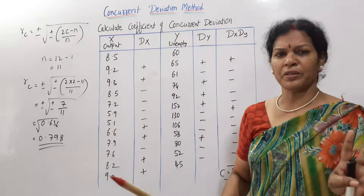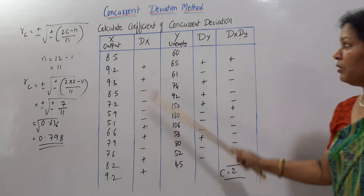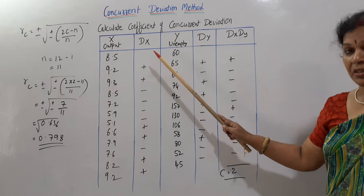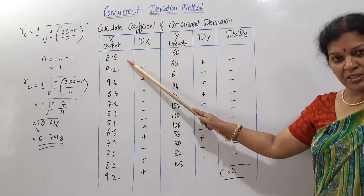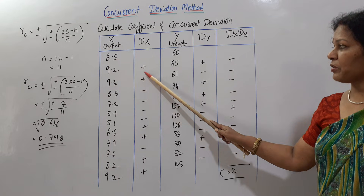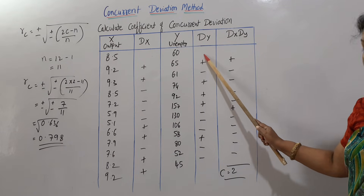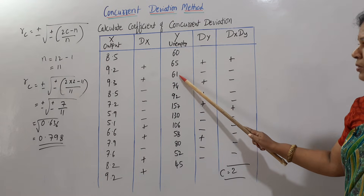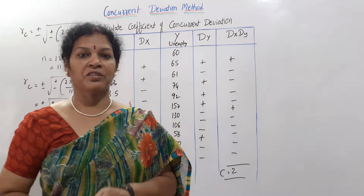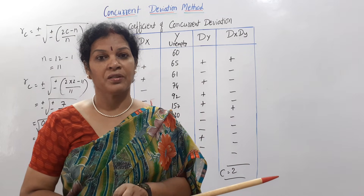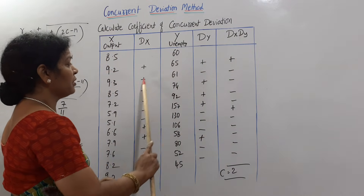Let me recap this simple problem. The formula is: RC equals plus or minus root of plus or minus into (2C minus n) by n. X values and Y values are given. For dx, assign signs by comparing each value with the next — more means plus, less means minus, and leave the first number empty as it is the base. Do the same for dy: first number left empty, then compare 60 with 65 (more, so plus), 65 with 61 (less, so minus), and so on. For dx×dy: plus×minus is minus, plus×plus is plus, minus×minus is plus — apply these rules to complete the column.